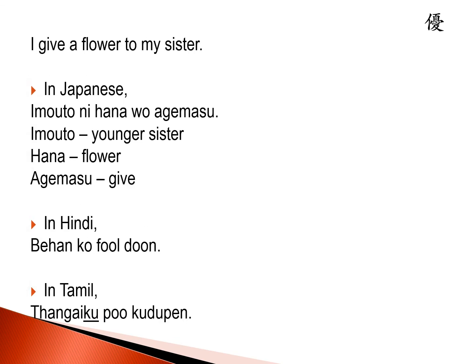Now let's look at the second example: I gave a flower to my sister. In Japanese this would sound like this: imoto ni hana wo agemasu. Hana wo agemasu means give flower. To whom are you giving this flower? To your sister. So imoto ni hana wo agemasu. Imoto is younger sister, hana is flower, and agemasu is to give. In Hindi you would probably say 'behen ko phool dhun', and in Tamil you would probably say 'thangaikku poo kuduppein'.